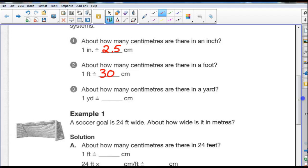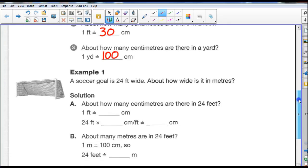About how many centimeters are there in a yard? One yard is probably close to 100 centimeters, give or take. Maybe it's 95, maybe it's 96, but it's close to 100. At this point, we're just estimating.